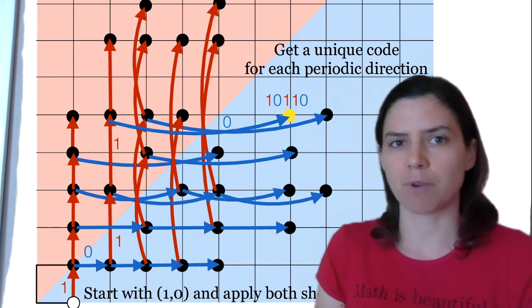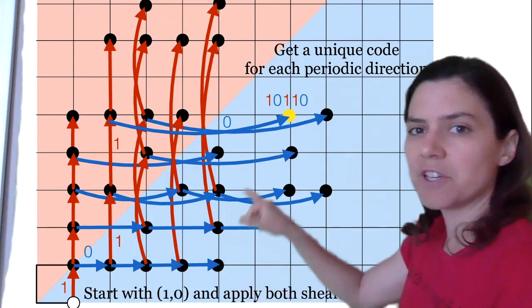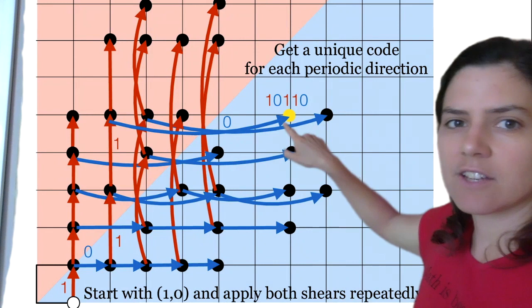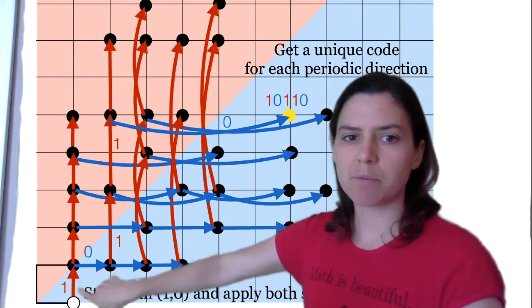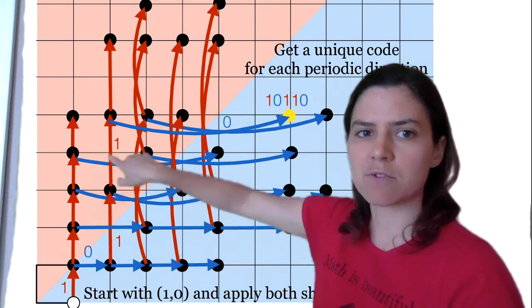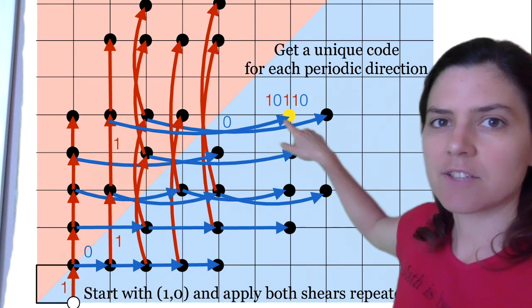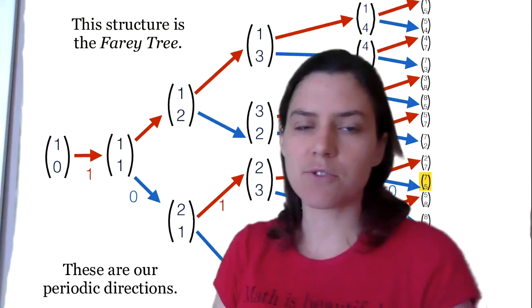This also gives us a coding scheme — a unique code for each periodic direction. For example, the point (7,5) has code 1,0,1,1,0, because starting at (1,0), we applied first matrix 1, then matrix 0, then matrix 1, then matrix 1, then matrix 0 to reach that point. So it's like a unique address.